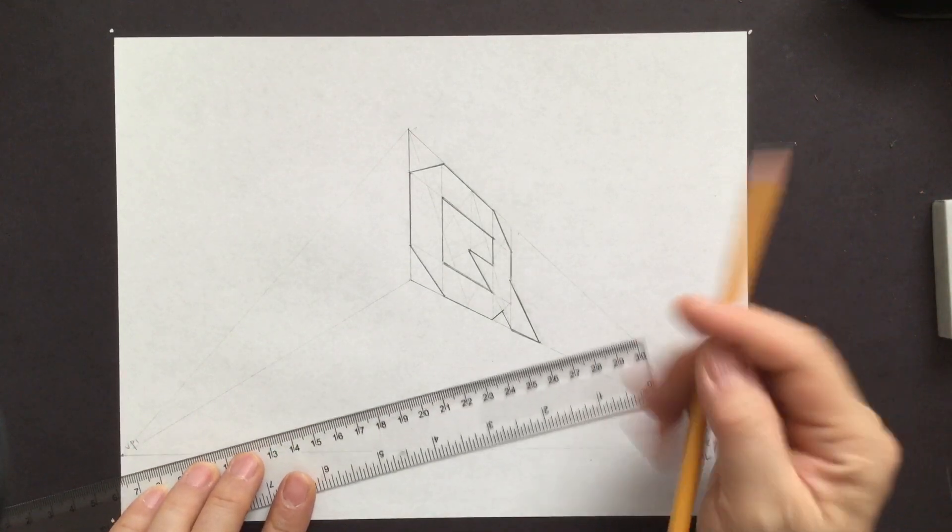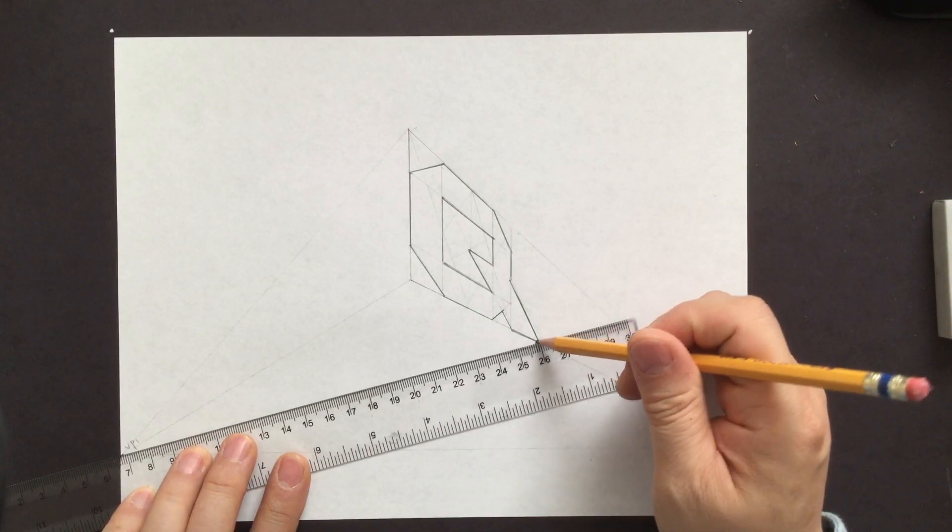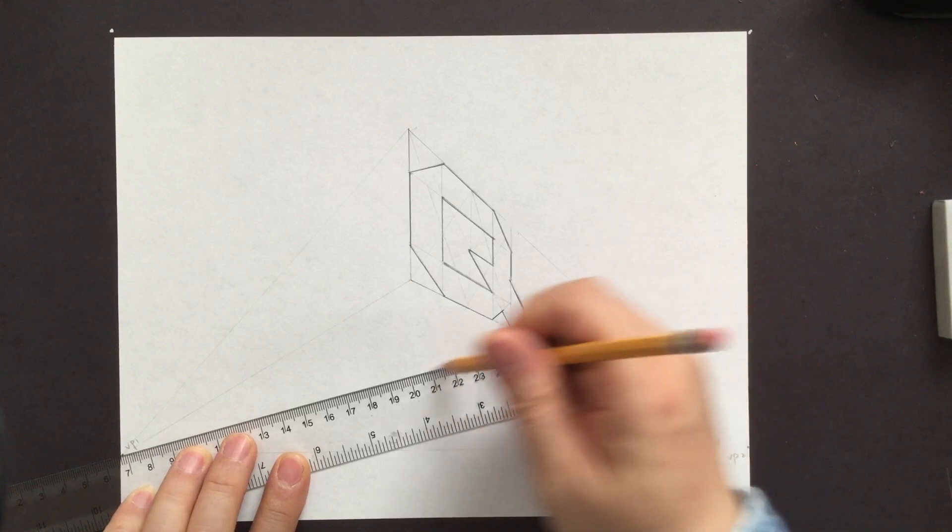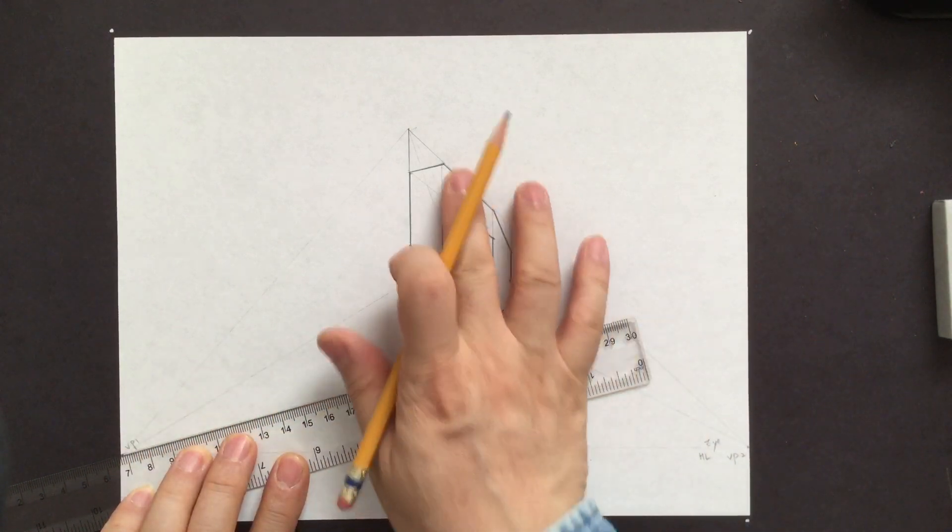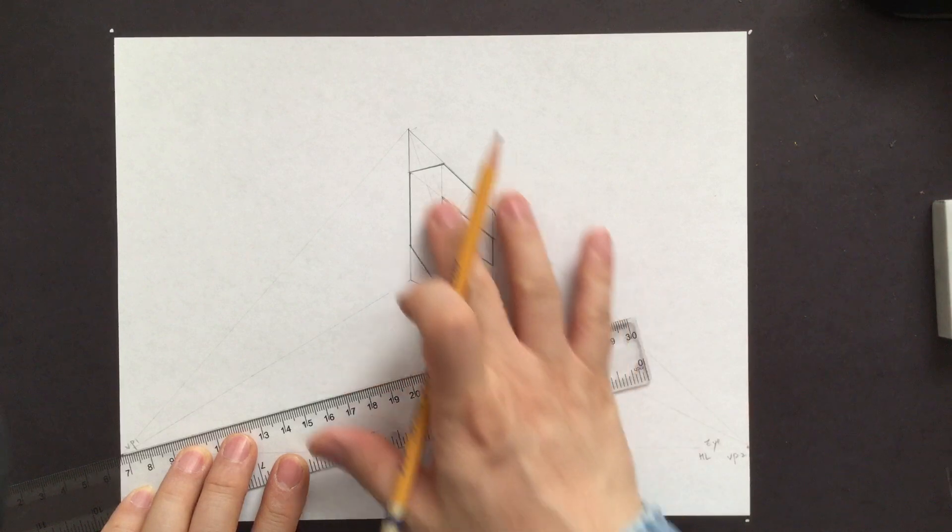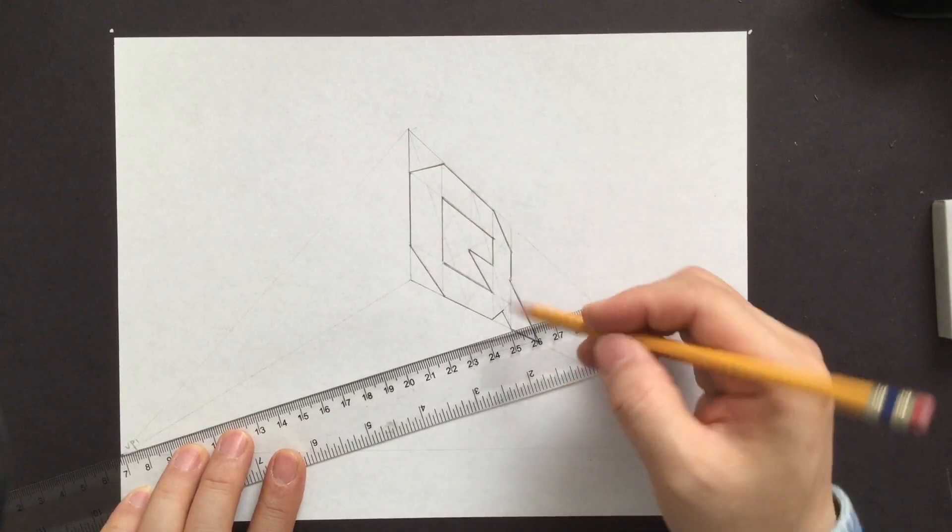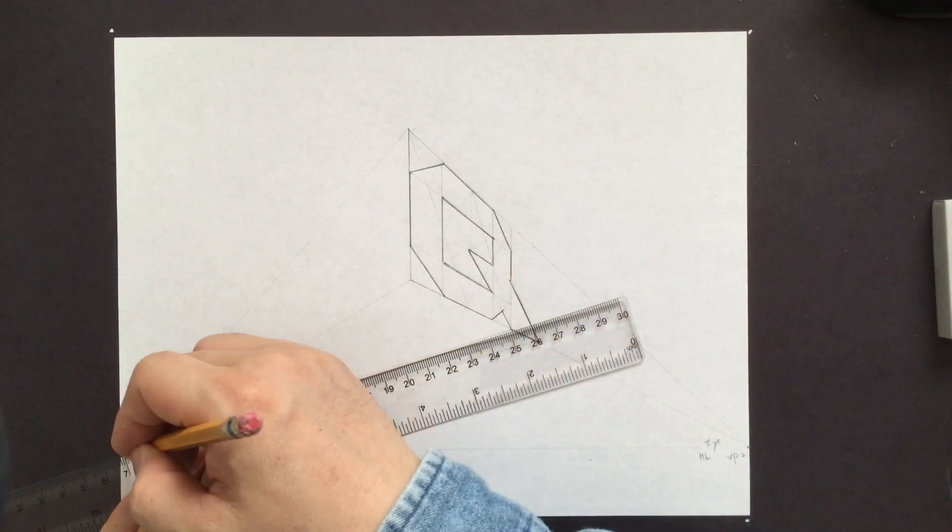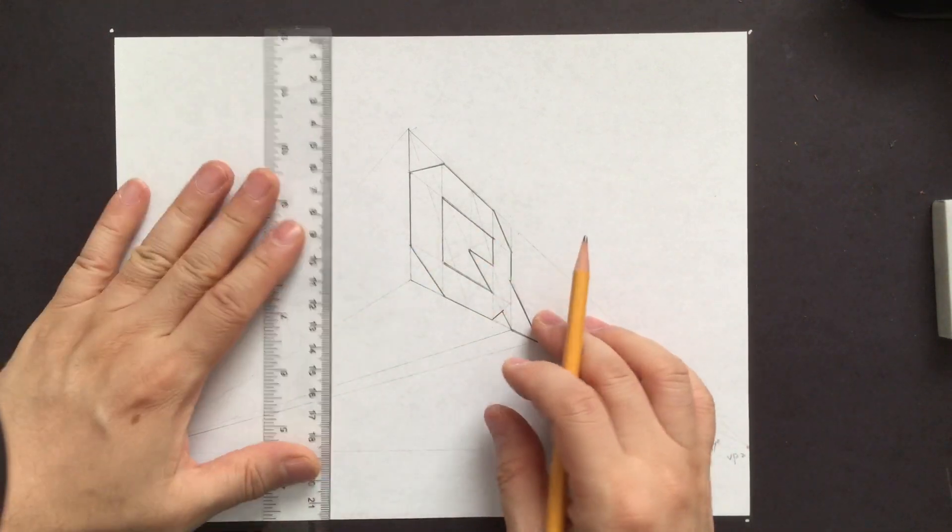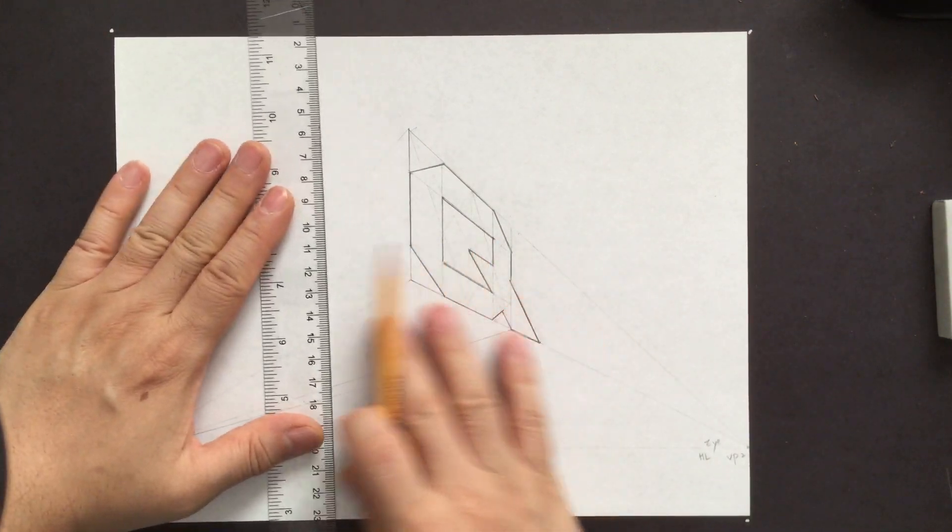From there, we connect it to the vanishing point. Everything is connected to the vanishing point too, because we worked on the right side. But we haven't connected to 3P one. So that's actually easier way. Decide the thickness on this side first.